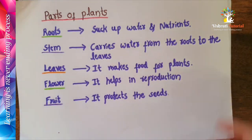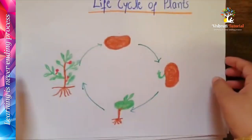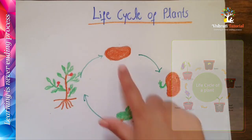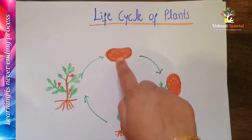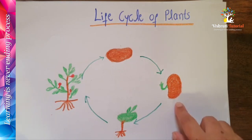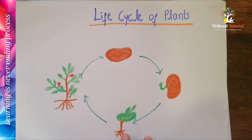Next, we'll look at the life cycle of the plant. First, we plant the seed into the soil. Next, a shoot sprouts from the seed — the sprouting process takes place here. Then roots grow down into the soil.